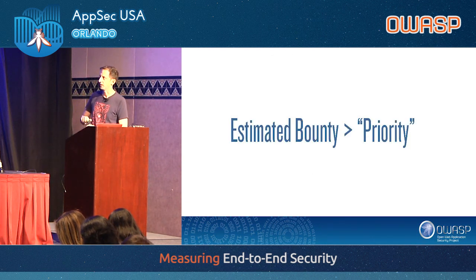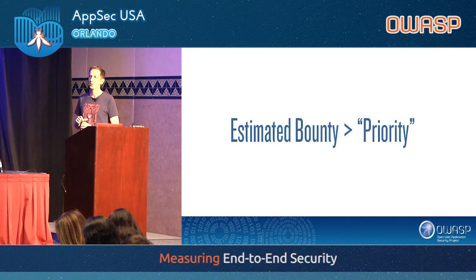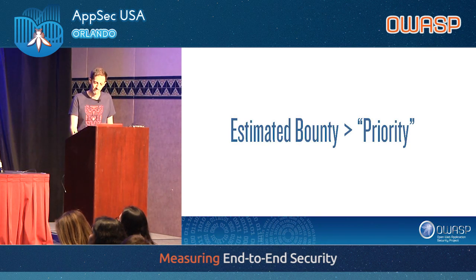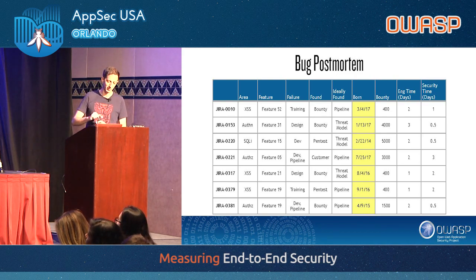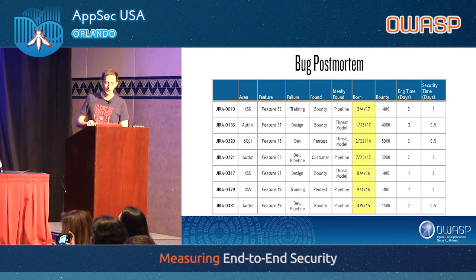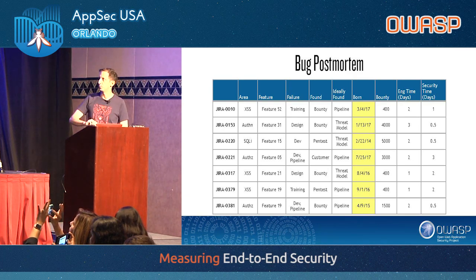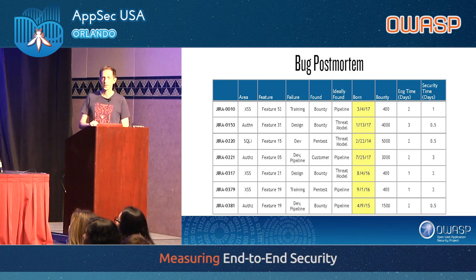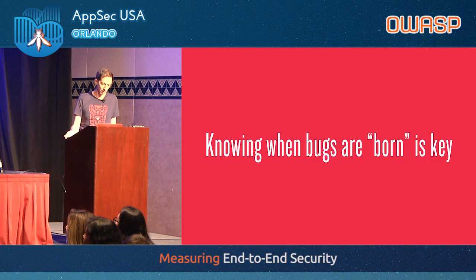The estimated bounty is more useful than priority level. It makes more sense to judge importance based on our taxonomy and how much we would pay a theoretical researcher. Here's an example with sanitized data: a few weeks' worth of findings shows failures of development, pipeline, and design, with bugs born at various times — not all from the same period. Knowing when that bug was born is really key.